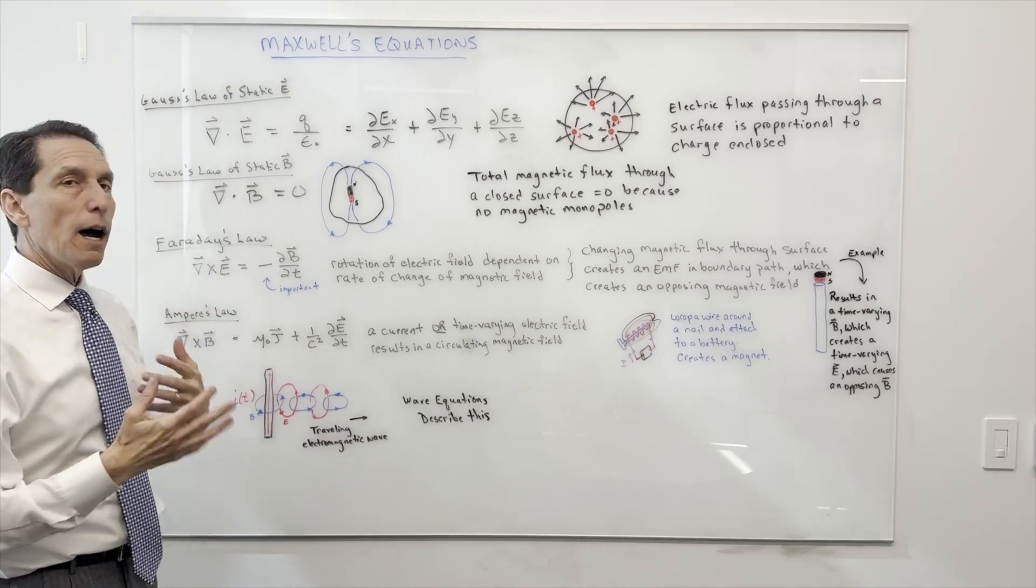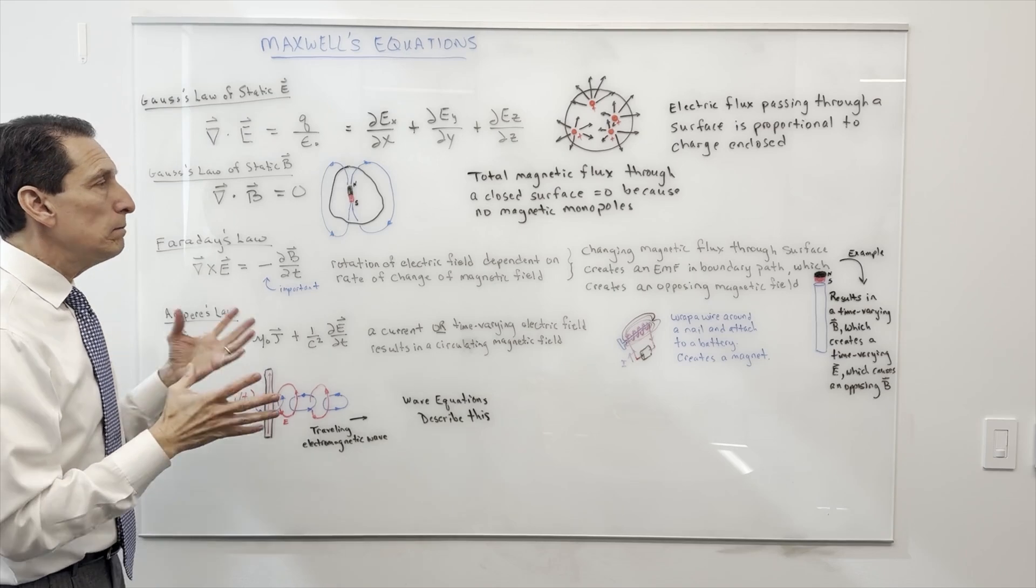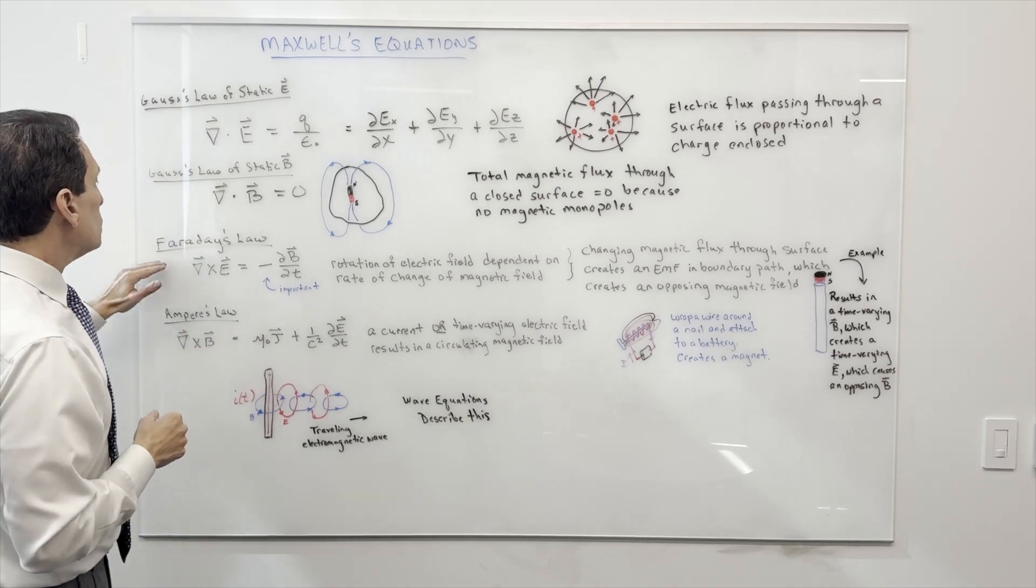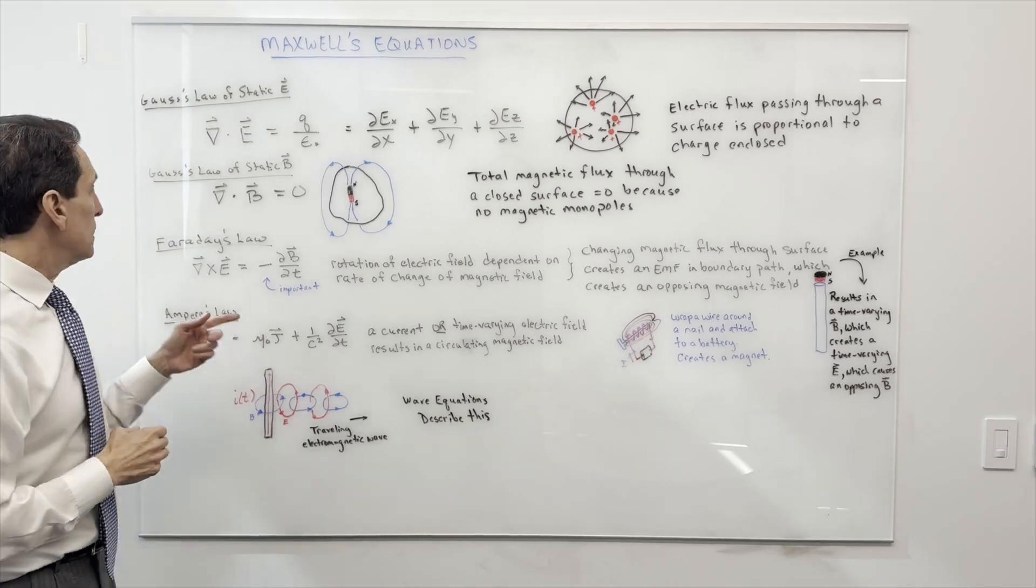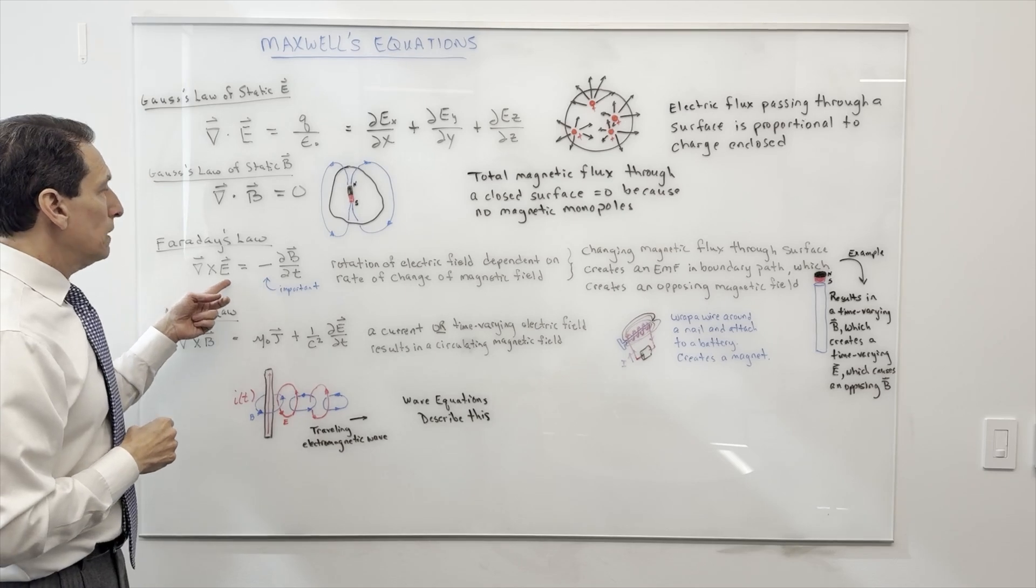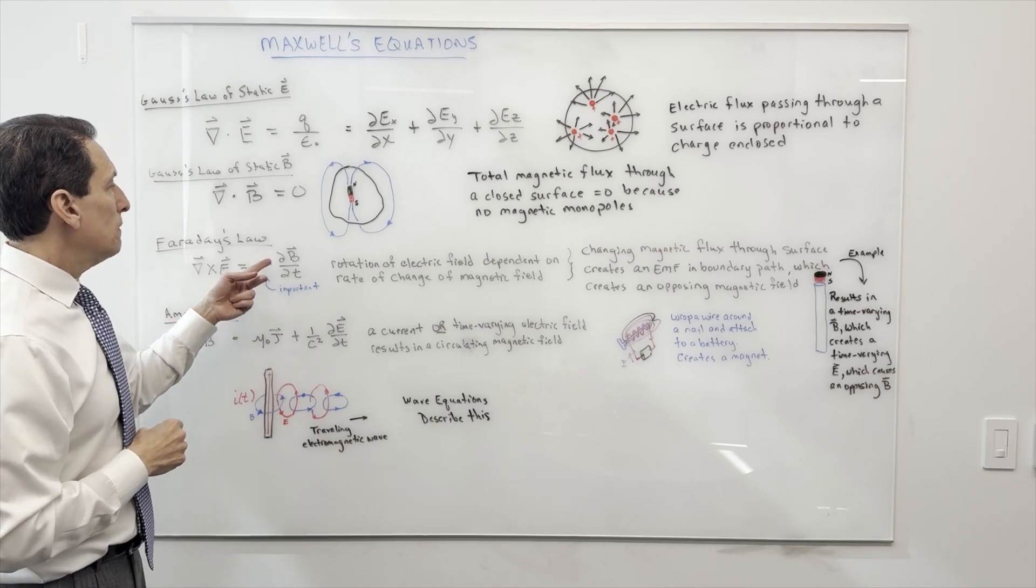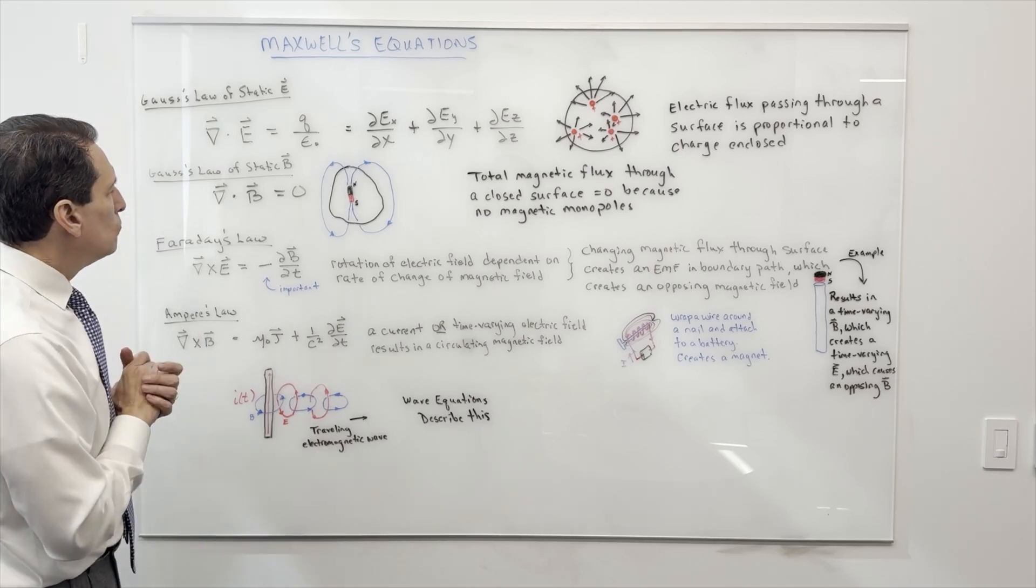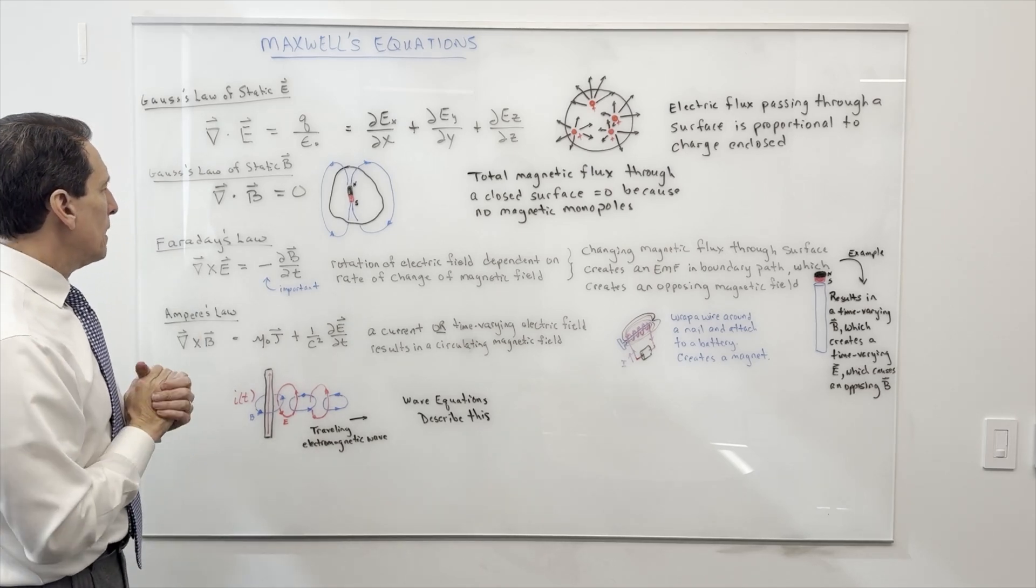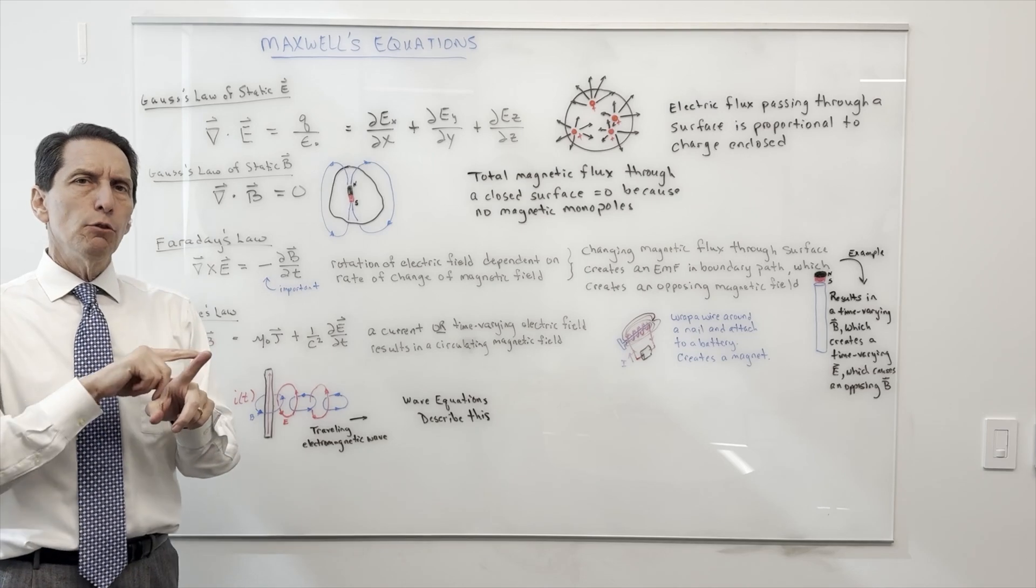Now the next two have to do with time-varying things, and they're probably a little more interesting. The first one is Faraday's Law, and it says the curl of the electric field is equal to the negative time variation of the magnetic field.